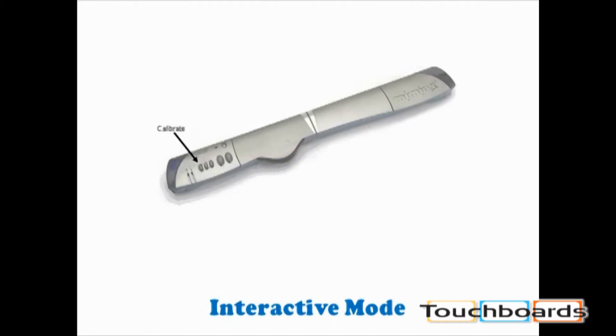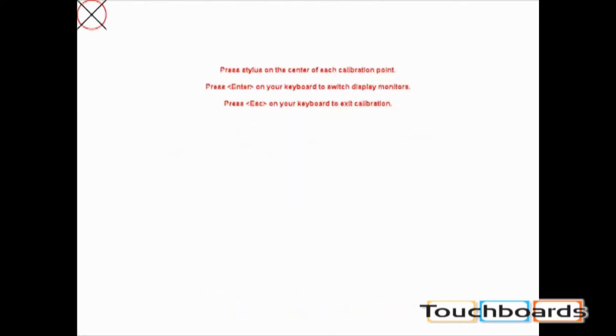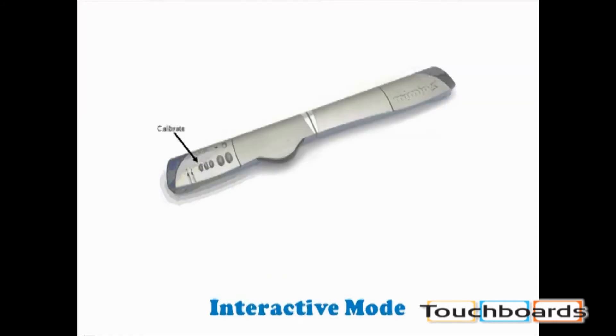Finally, the fifth button is Calibrate. Pressing the Calibrate button is how you initially get your system into interactive mode and align your projection for interactive use.